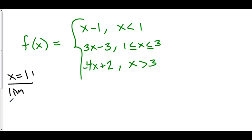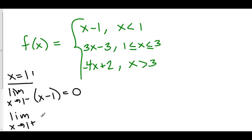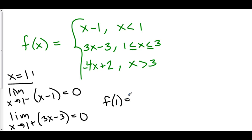The limit as x approaches 1 from the left: we use x minus 1, and plugging in gives 0. The limit as x approaches 1 from the right: we use 3x minus 3, and plugging in 1 gives 3 minus 3 equals 0. So the limit exists at x equals 1 and is 0. Checking f of 1: at x equals 1 we use the middle function 3x minus 3, which also gives 0. The limit equals the function value, so f is continuous at x equals 1.